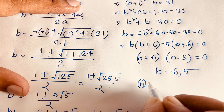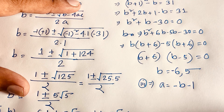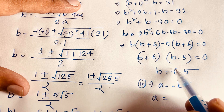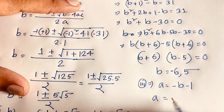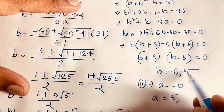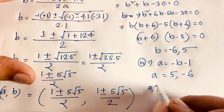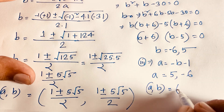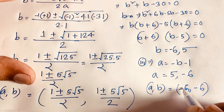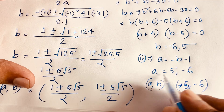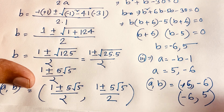Recalling our equation A equals negative V minus 1: when V equals negative 6, A equals negative of negative 6 minus 1 equals 6 minus 1 equals 5. And when V equals 5, A equals negative 5 minus 1 equals negative 6. So our final answers are: when V equals negative 6, A equals 5; and when V equals 5, A equals negative 6.